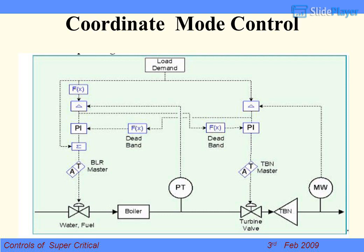Frequency corrections are taken as feed forward signals. What will happen if something goes wrong with any auxiliary — it gets stripped?